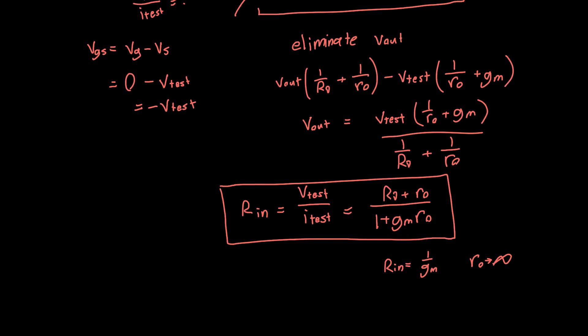And if we take the limit of this expression as RO approaches infinity, then we can neglect this RD term on the top, because on the top it's just approximately RO. We can neglect this one term, so it's just RO over GM RO, which is indeed 1 over GM. This is the exact expression for input resistance of a common gate amplifier, at DC at least.